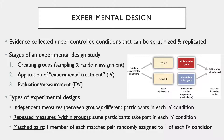In stage 2, the researcher applies the experimental treatment — the independent variable. In the pain reliever study, this would be whether individuals were given the pain reliever or the placebo. In stage 3, the dependent variable is evaluated or measured to determine if there are differences between the groups.